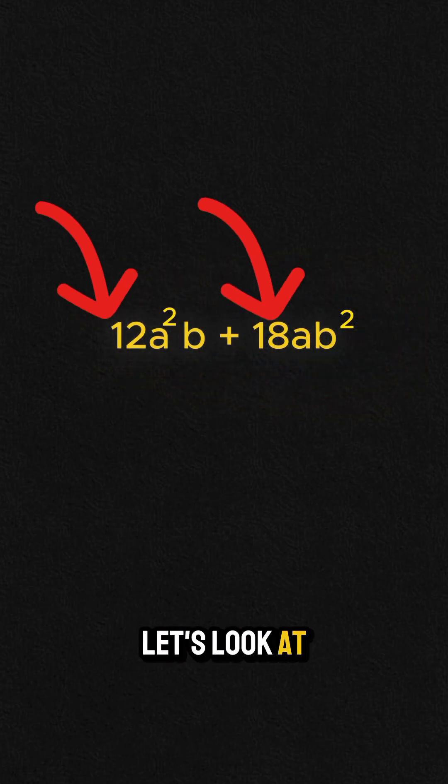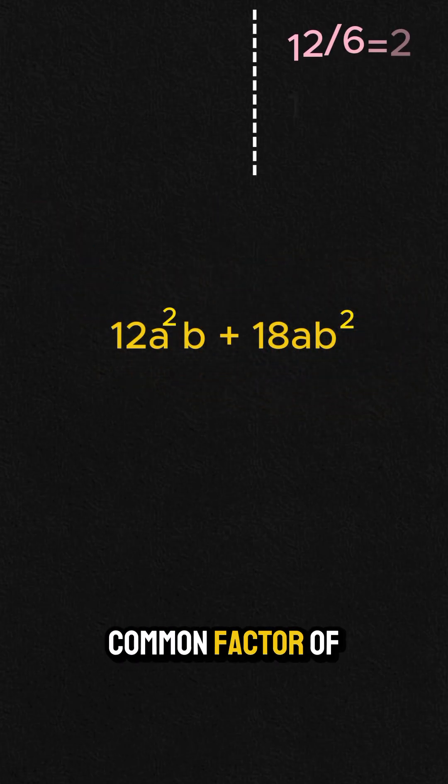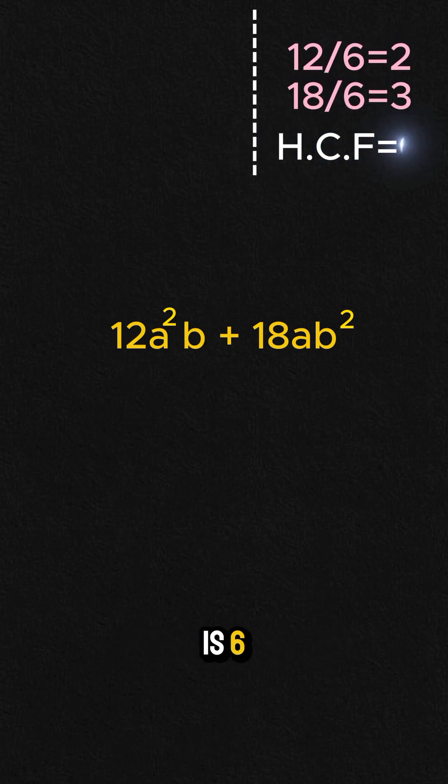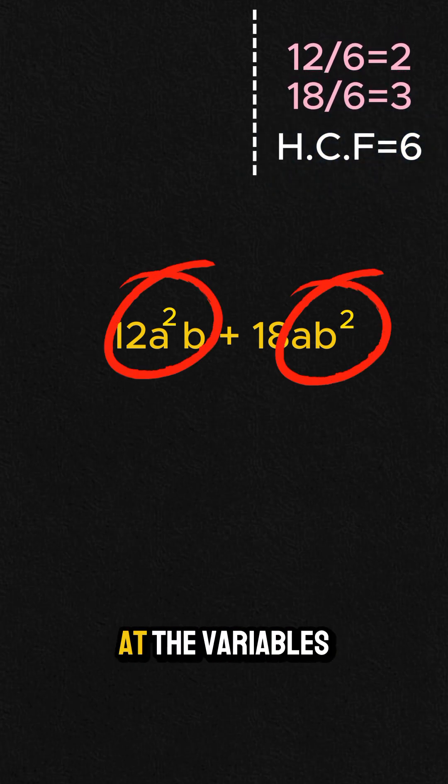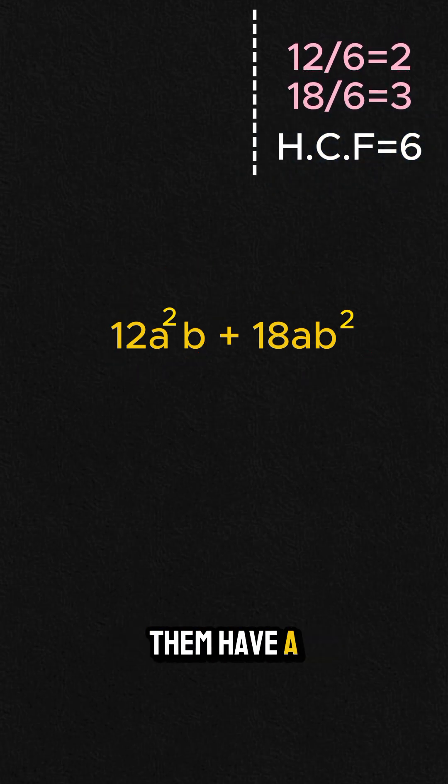So step 1, let's look at the numbers. So the highest common factor of 12 and 18 is 6. And the second step, let's look at the variables. So both of them have a and b, but the smallest powers are a to the power of 1 and b to the power of 1.